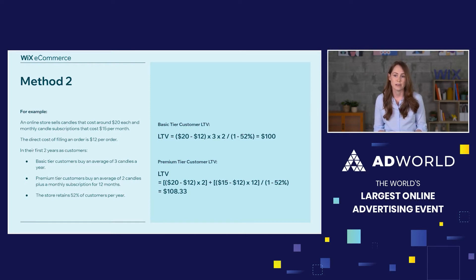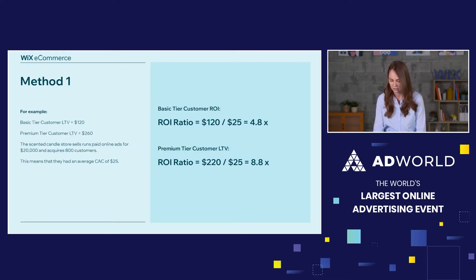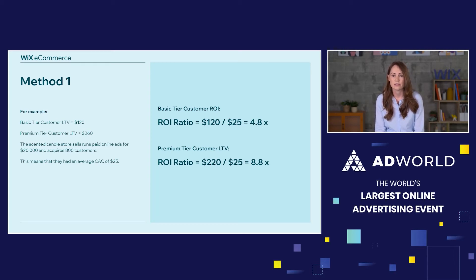Now that we've calculated our lifetime values, we can think about our return on investment ratio. ROI really just means how much you're earning on every customer you're acquiring. To calculate it, we need our customer acquisition cost — how much it costs to acquire a customer. Your ROI ratio is lifetime value divided by customer acquisition costs. Using method one, we had basic tier $120 and premium tier $260. If we spent $20,000 to acquire 800 customers, that's an average CAC of $25. So basic tier ROI would be 4.8x and premium tier ROI would be 8.8x.